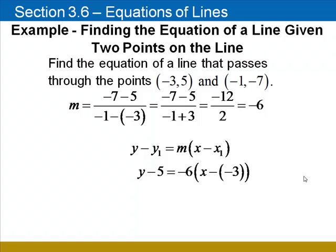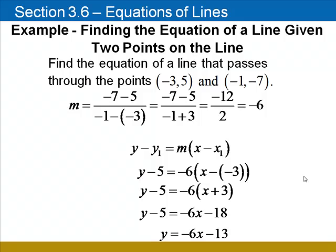Again, I'll rewrite x minus negative 3 as x plus 3, distribute negative 6, and add 5 to both sides. The equation of the line is y equals negative 6x minus 13.